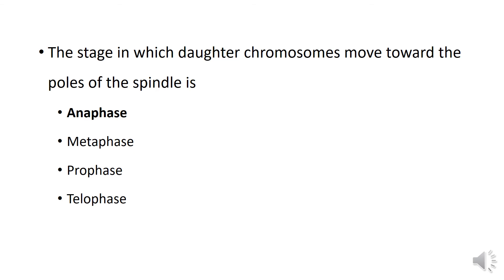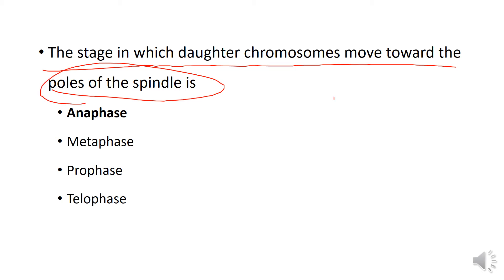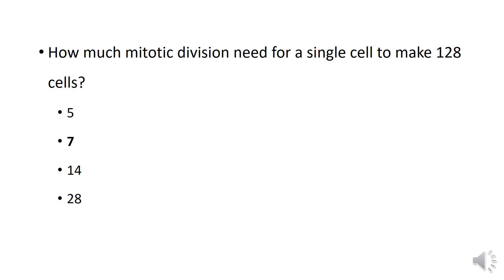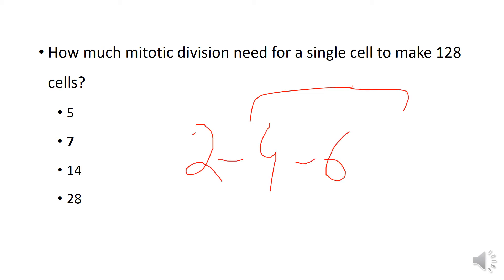The stage in which the chromosomes move towards the poles of the spindle — the cytoplasmic division of a cell. How many mitotic divisions does a single cell need to make? Mitosis: 1 divides into 2, then 2 into 4, then 4 into 8.